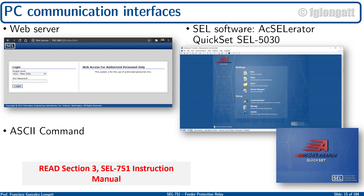Another way is using specialized software by Schweitzer called the Accelerator QuickSet SEL 5030. The Accelerator is dedicated software for communication to the relay using the Ethernet port and TCP/IP. I will spend time on that software later. There is also a third option using the classical ASCII command, which requires a software terminal emulation. I will not cover this at the moment, but if there is any requirement for using the ASCII protocol, I will do a video later.